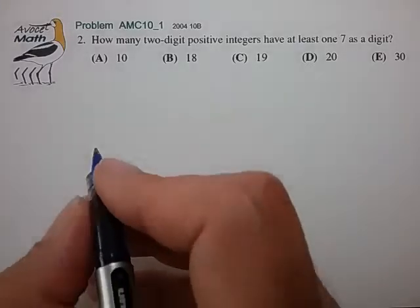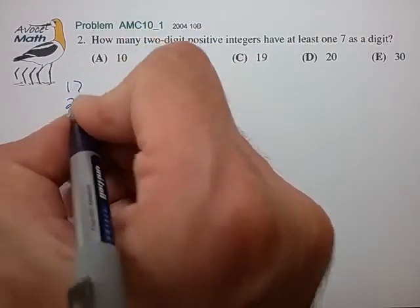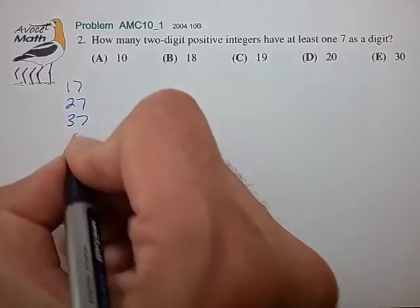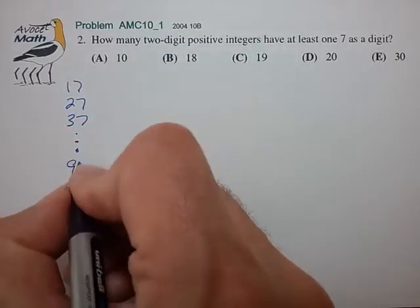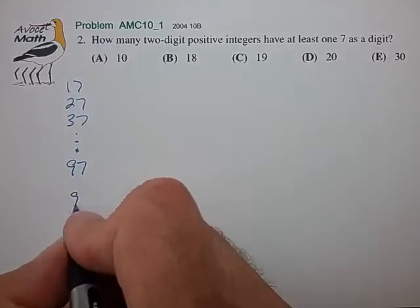So let's count up all two-digit numbers with 7 as the units digit as being 17, 27, 37, all the way up to and including 97 for a total of 1, 2, 3, 4, 5, 6, 7, 8, 9, 9 values.